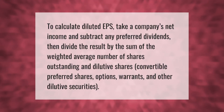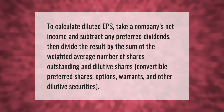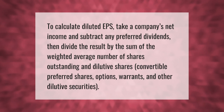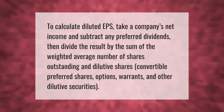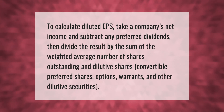To calculate diluted EPS, take a company's net income and subtract any preferred dividends. Then divide the result by the sum of the weighted average number of shares outstanding and dilutive shares — convertible preferred shares, options, warrants, and other dilutive securities.